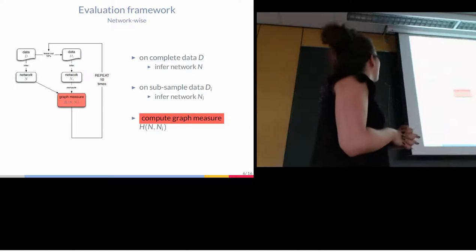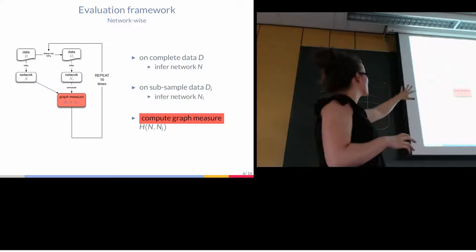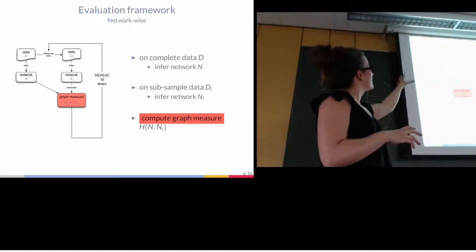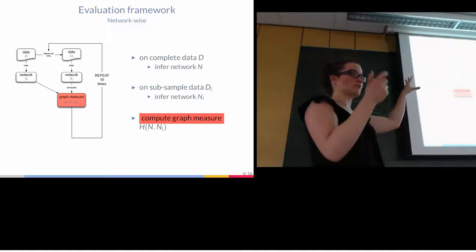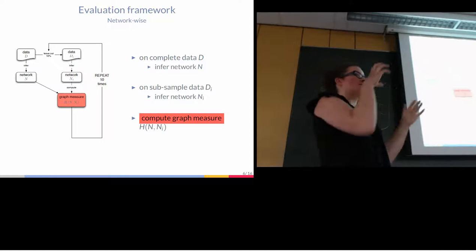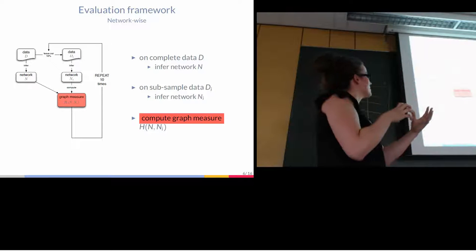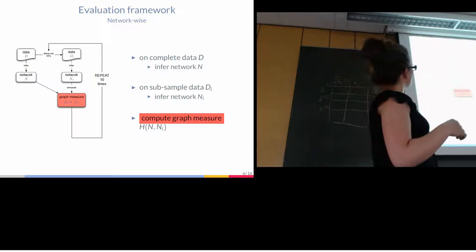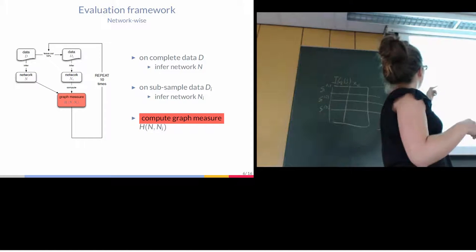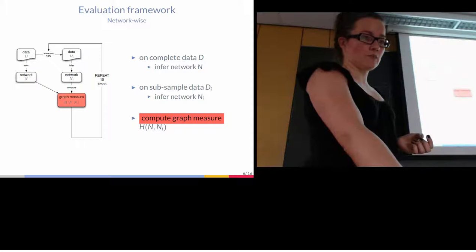So how did I do the evaluation? I took my dataset D, I inferred the network, which is the full network. And then I did a tenfold cross-validation on 90% of the data. So I inferred the network on 90% of the data. Then in the second step, left out the next 10% of the network, which gives me then 10 networks. For each of them, I computed the Hamming distance with the original network. So that would give me 10 values for each dataset and each method.